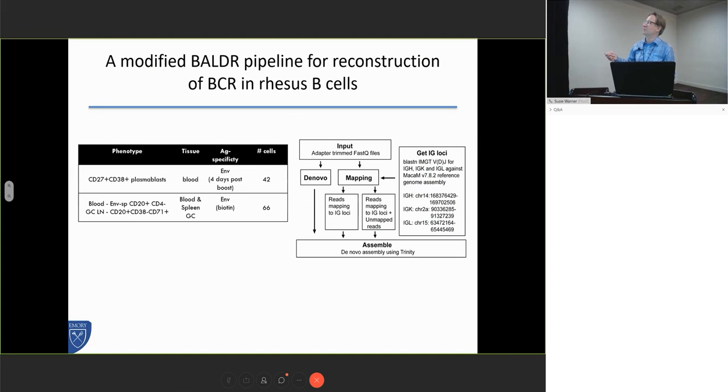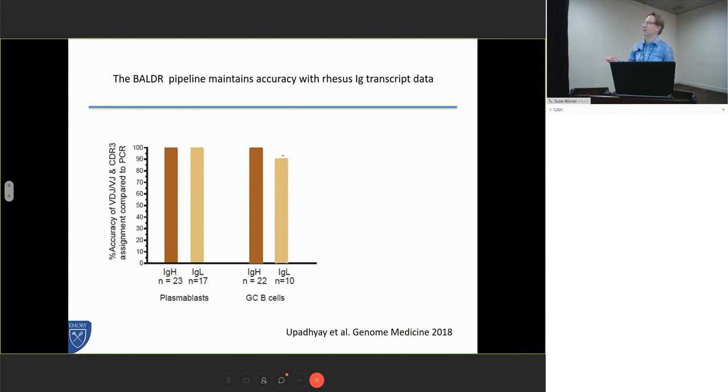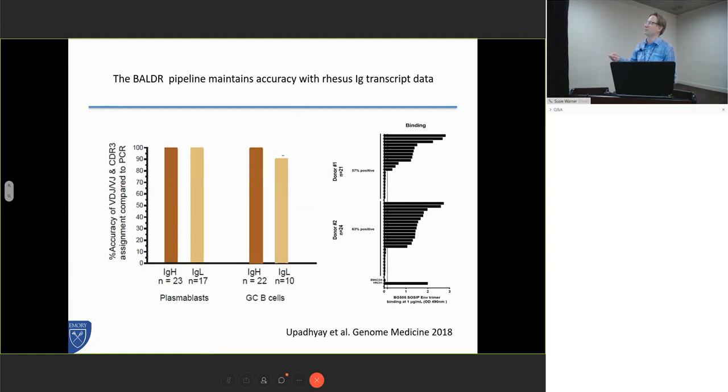One of the first things we did was to try and reconfigure the Baldr pipeline to be accurate for monkey B cells. Five minutes already, okay. We used a novel—we switched up our filtering algorithm, and we were able to test it on a number of vaccine-induced either SOSIP-induced plasmablasts or SOSIP-induced germinal center B cells.